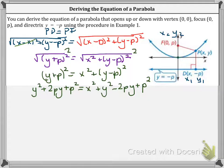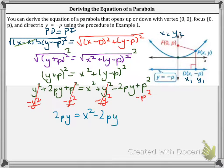And so if we simplify, if I subtract Y squared from both sides, that goes away. If I subtract P squared from both sides, that also goes away.